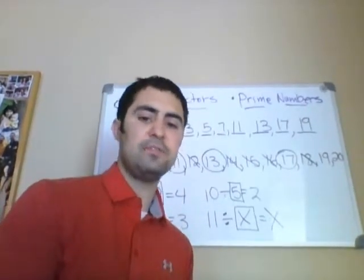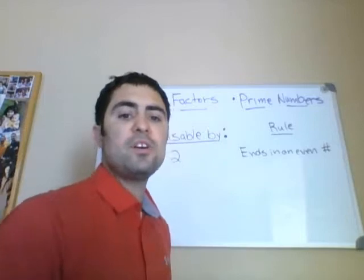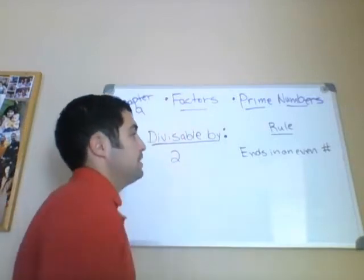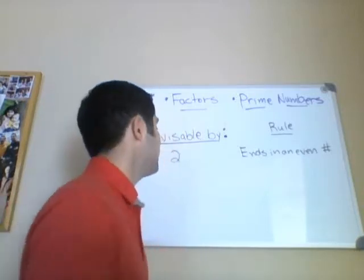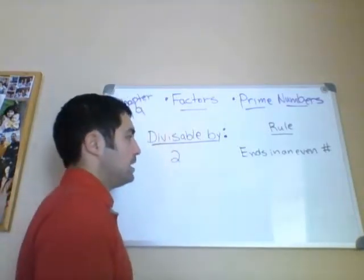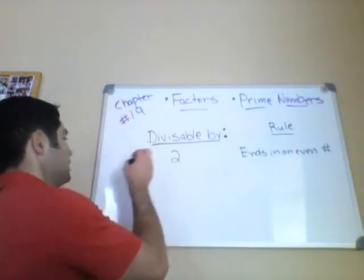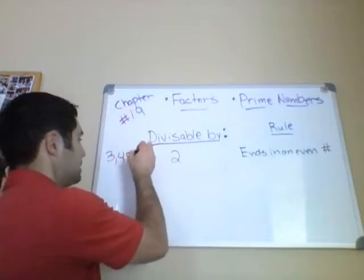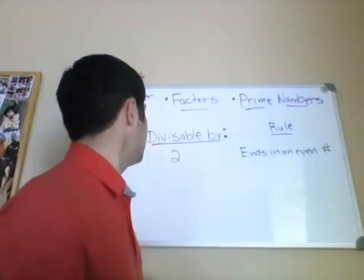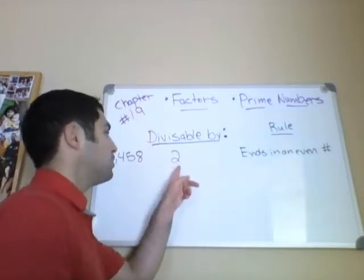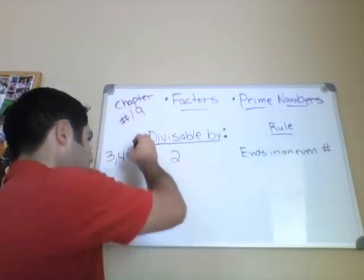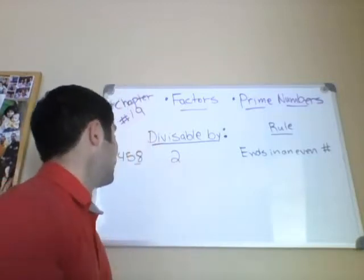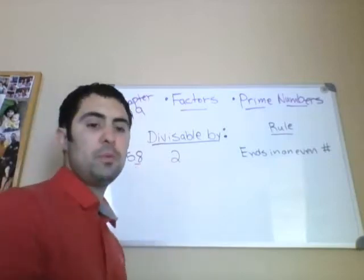Let's talk about divisibility rules. Is a number divisible by 2? We can tell if a number is divisible by 2 if the number ends in an even number. Here's an example: 3,458. Does this number end in an even number — 2, 4, 6, 8, or 0? The answer is yes, so this number is divisible by 2.